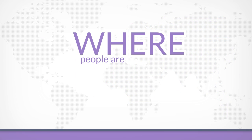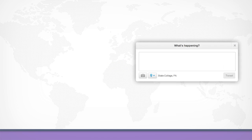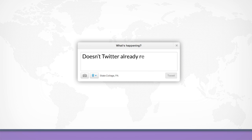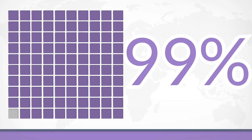This means that where people are talking about is just as important as what people are talking about. You may be thinking: doesn't Twitter already record my location and include it with my tweets? It certainly can, but less than 1% of all tweets include geolocation data. So the more difficult question, and the concept we're interested in, is how do we determine the geographic context of the other 99% of tweets?